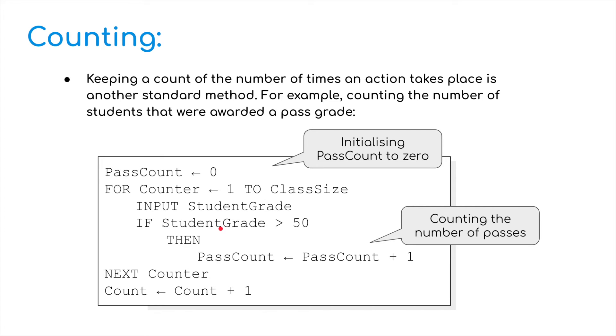If the student grade is greater than 50, then pass count has been assigned the value of pass count plus 1. So we're adding the number of passes. So every time a student scores more than 50 in the class, then pass count is going to have a 1 added. We then move on to the next counter and then count equals count plus 1. So basically, what we're doing there is counting the number of passes, changing this every time something has happened. Every time that if statement is true, then we add a pass. So we're not totaling the number of marks this time, we're basically counting how many students have passed or have got over 50.